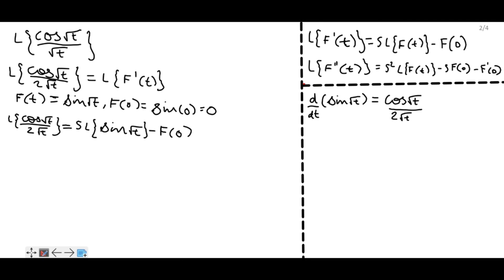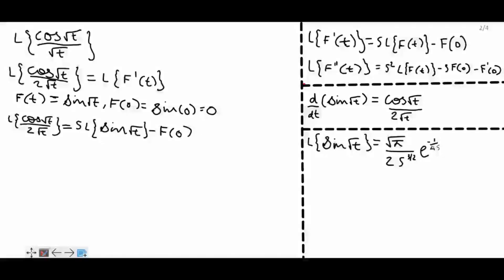Since the derivative of sin(√t) is cos(√t) / (2√t), from the previous video we know that the Laplace transform of sin(√t) is √π / (2s^(3/2)) times e^(-1/4s). The link for that video is given in the description below.